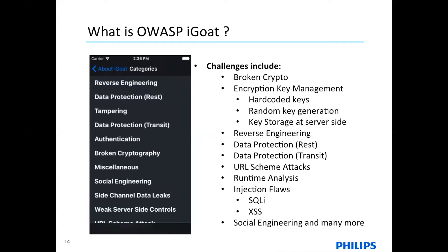We have a wide range of challenges in iGoat. We have broken cryptography challenges, key management problems where keys are hard-coded, random key generation, and keys stored server-side. There is also an interesting reverse engineering challenge where you take the IPA file, reverse engineer it using ClassDump or Clutch, get access to the source code, and find sensitive information. Then there's data protection at rest, data protection in transit, runtime analysis, and injection flaws. In runtime analysis we have different challenges for Cycript, Snoop-It, GDB and other runtime hooking debuggers.